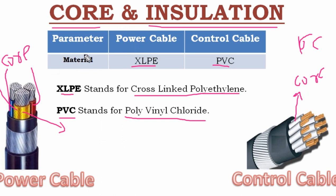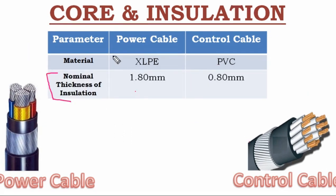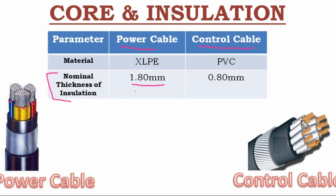Regarding the nominal thickness of the insulation: in the power cable, the nominal insulation thickness is 1.8 mm, and in the control cable, the nominal insulation thickness is 0.8 mm.